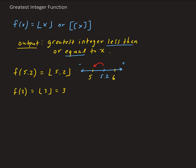Let's look at another example. Let's say we want to evaluate this function at one-half. Looking at this on the number line, we have one-half between 0 and 1. Using the definition — we want the greatest integer less than or equal to x — the greatest integer smaller than one-half is going to be 0.